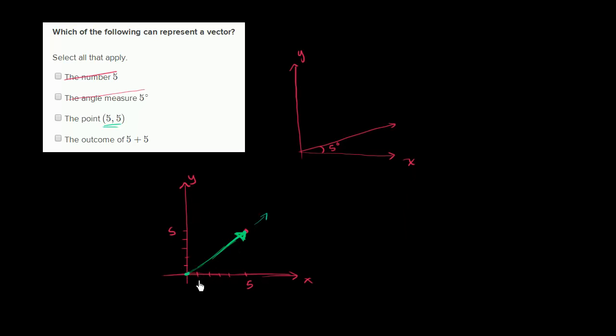It's that general direction. So this could specify a magnitude and a direction. So this could represent a vector.